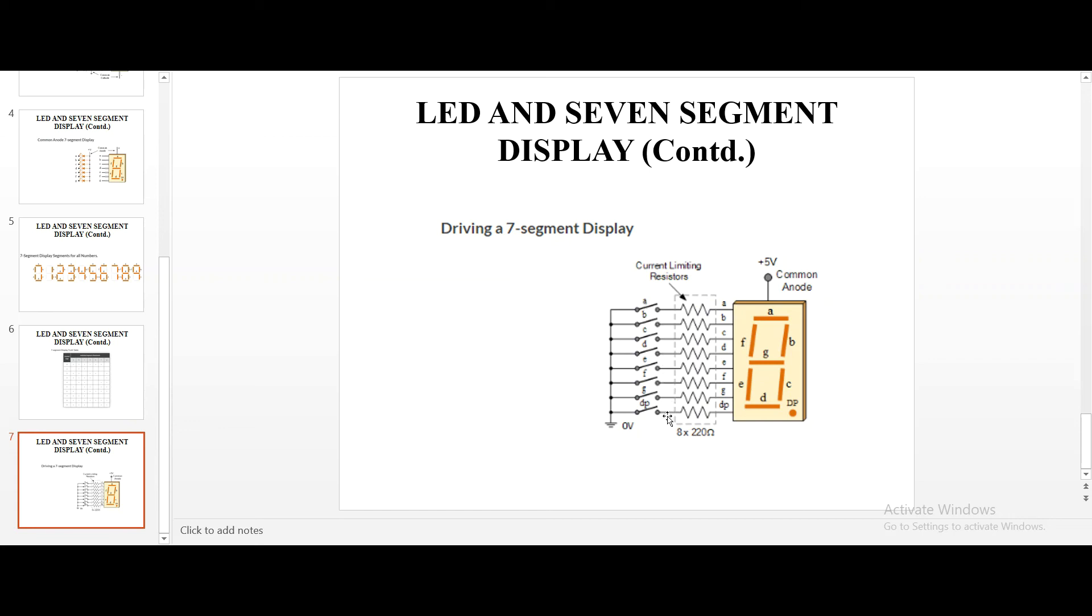So, whatever segments we close, we obtain 1 and whatever segments we open, it is obtained as 0. Since the circuit is closed, plus 5, closed and ground. So, plus 5, open, that is 0. See here, if it is closed, it is 1 and if it is not closed, it is 0.